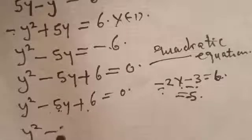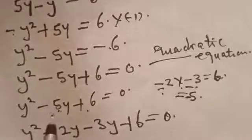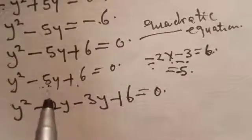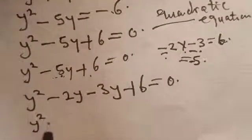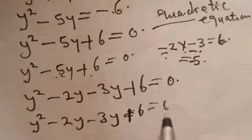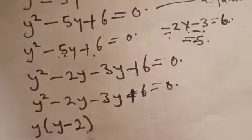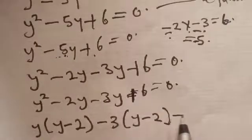So we split minus 5y into minus 2y minus 3y, giving: y squared minus 2y minus 3y plus 6 equals 0. Factoring by grouping: y(y minus 2) minus 3(y minus 2) equals 0, which gives (y minus 3)(y minus 2) equals 0.